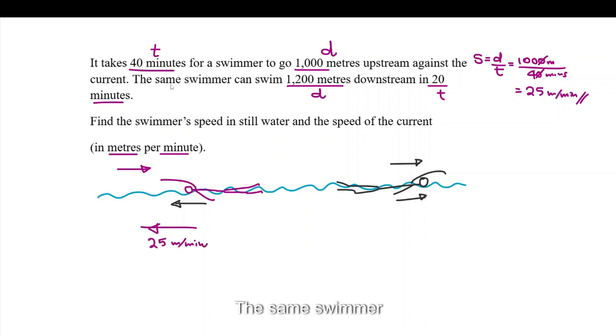The same swimmer can swim. Here's the distance. Here's the time. Now, let's find the speed again, the downstream speed, which will be higher. So, it's 1200 divided by 20. 0 and 0 gets cancelled out. 120 divided by 2. So, that is 60 meters per minute. Okay. Now, that is the downstream speed. 60 meters per minute.